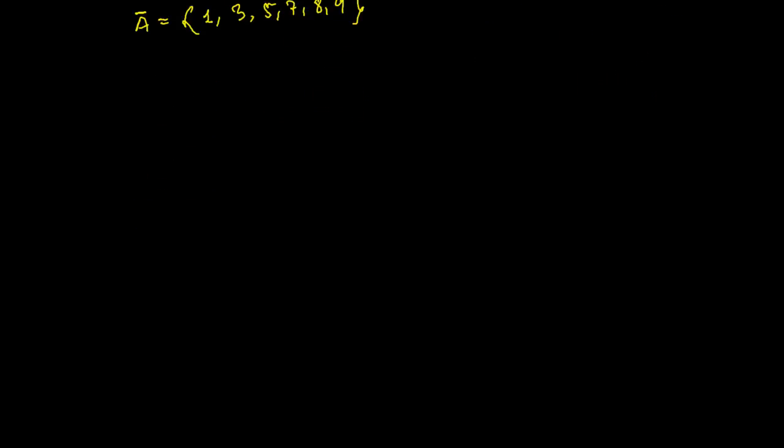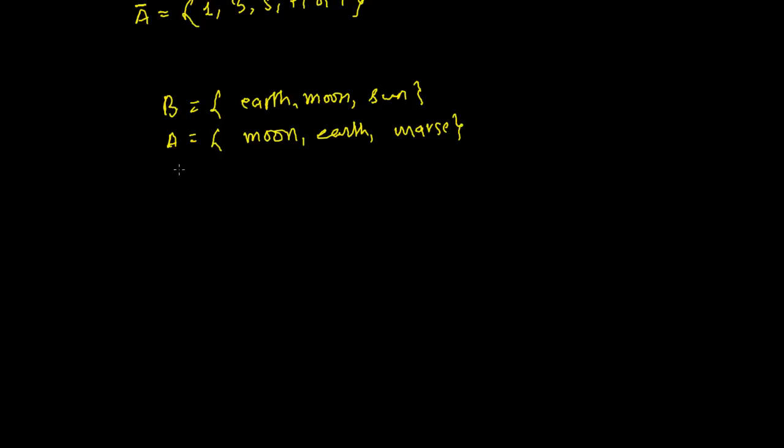Let me take one more example. Suppose I have set B which is representing Earth, Moon and Sun, and set A represents Moon, Earth and Mars, and C represents Jupiter, just Jupiter, and I have U which represents all elements.